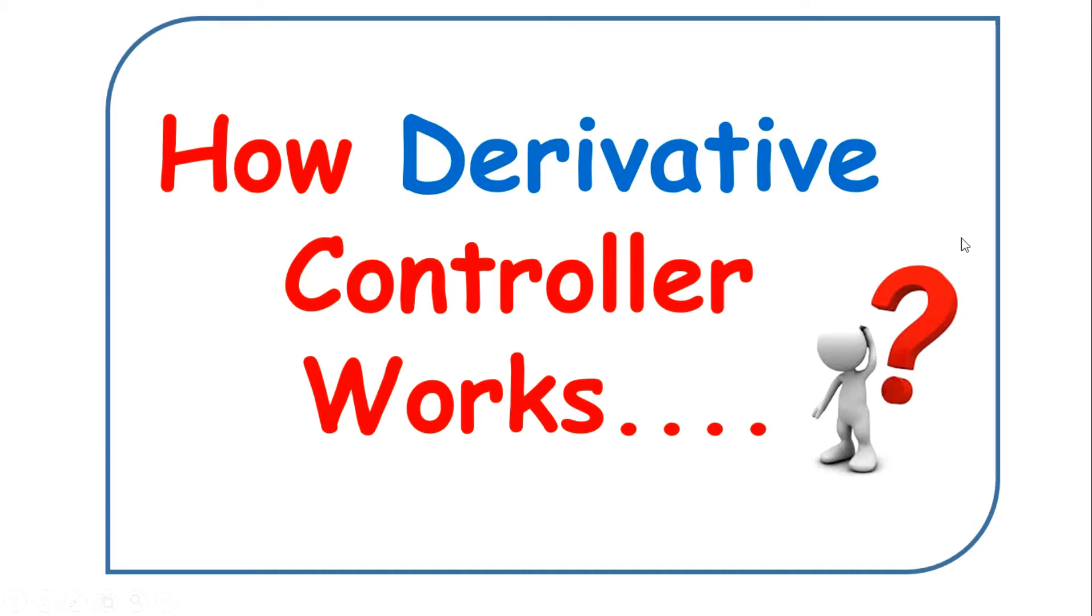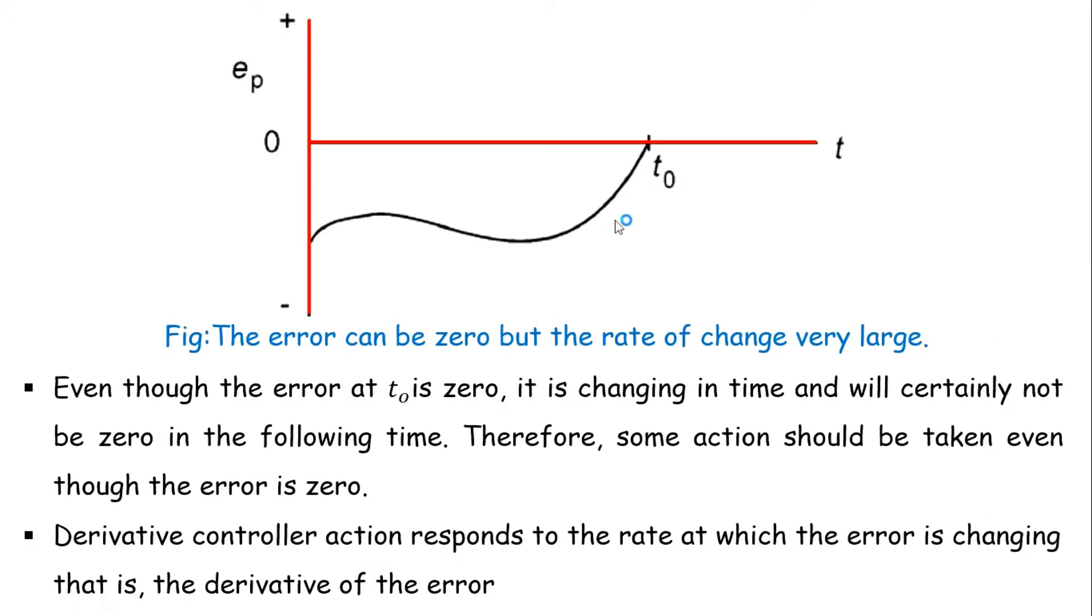Before proceeding to the derivative controller, first of all understand this error graph. You can clearly see that even though the error at time t0 is zero, it is changing in time and will certainly not be zero in the following time. Therefore some action should be taken even though the error is zero.